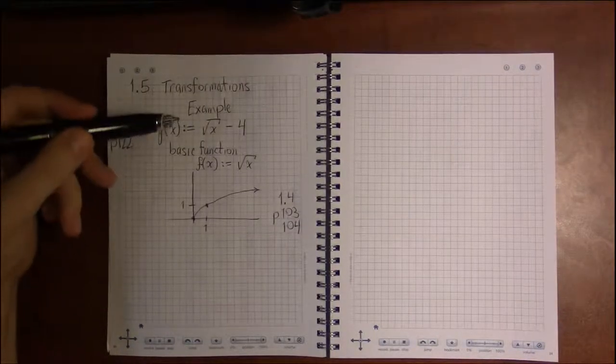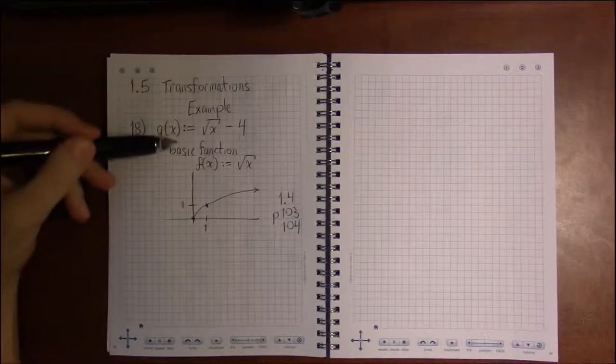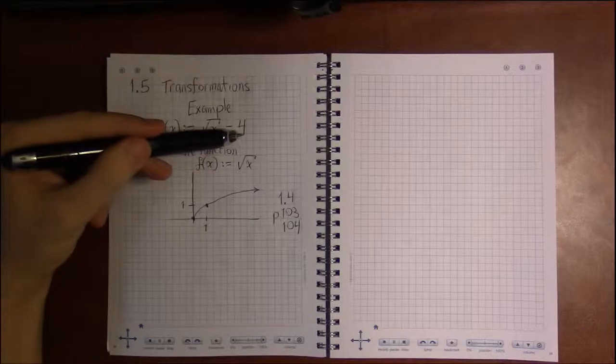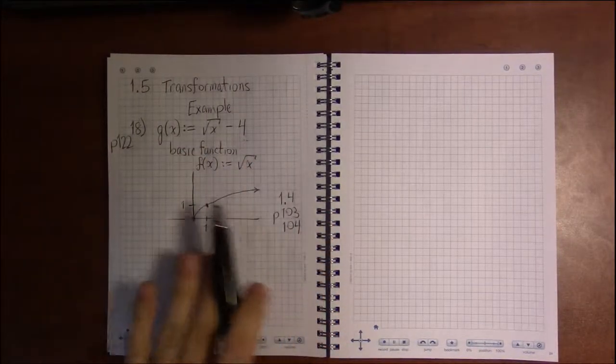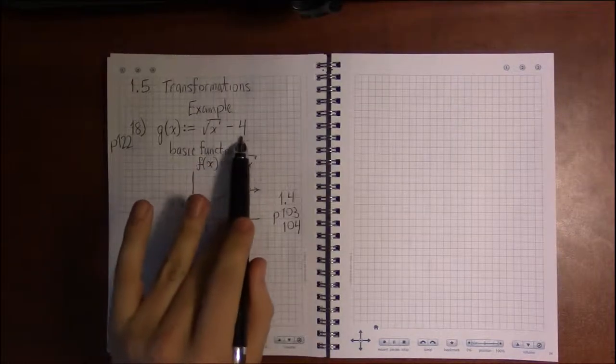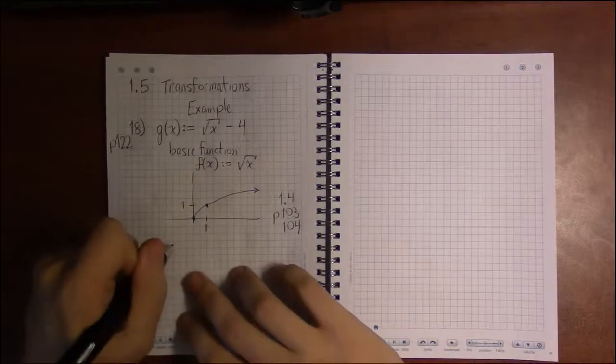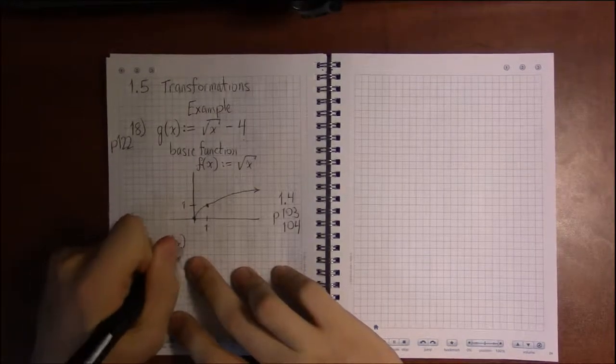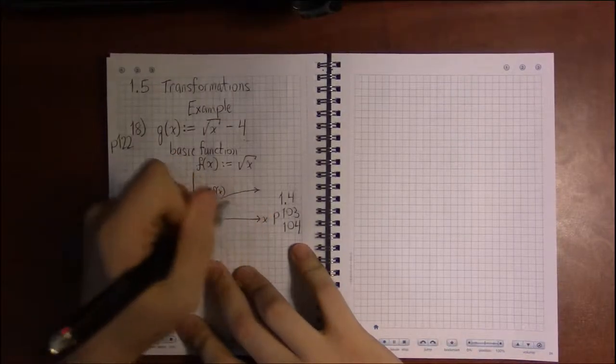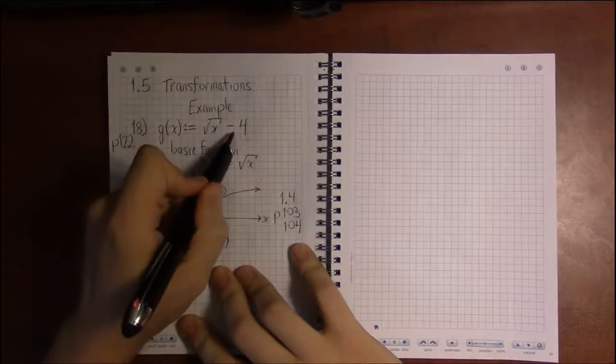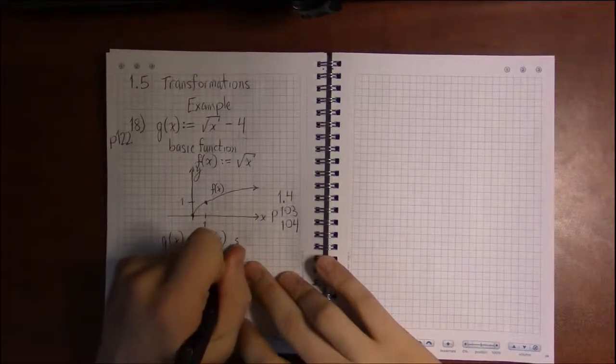You'll see the graphs of all these basic graphs that we're using here. So the next thing to do is to determine what transformation do we need to apply to f to get g. Well, I already said minus 4 was the transformation. When you're adding or subtracting, that's just going to be a simple shift. And since the minus 4 is outside the square root, this is going to be a vertical transformation.